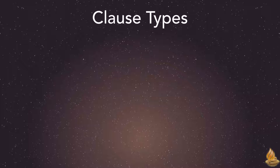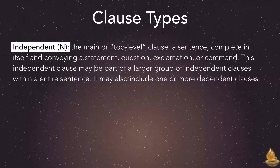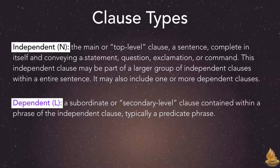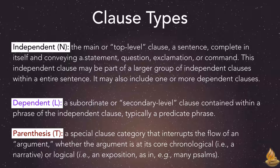Accordance recognizes three different kinds of clauses. The independent is the main or top-level clause — a sentence complete in itself conveying a statement, question, exclamation, or command. It may be part of a larger group of independent clauses and may include one or more dependent clauses. The dependent clause is a subordinate or secondary-level clause contained within a phrase of the independent clause, typically a predicate phrase. Finally, the parenthesis is a special clause category that interrupts the flow of an argument — whether chronological, as in a narrative, or logical, as in an exposition, as in many psalms.